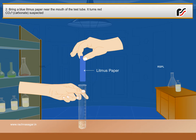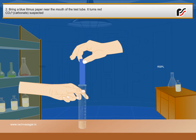Bring a blue litmus paper near the mouth of the test tube. It turns red. CO32 minus carbonate suspected.